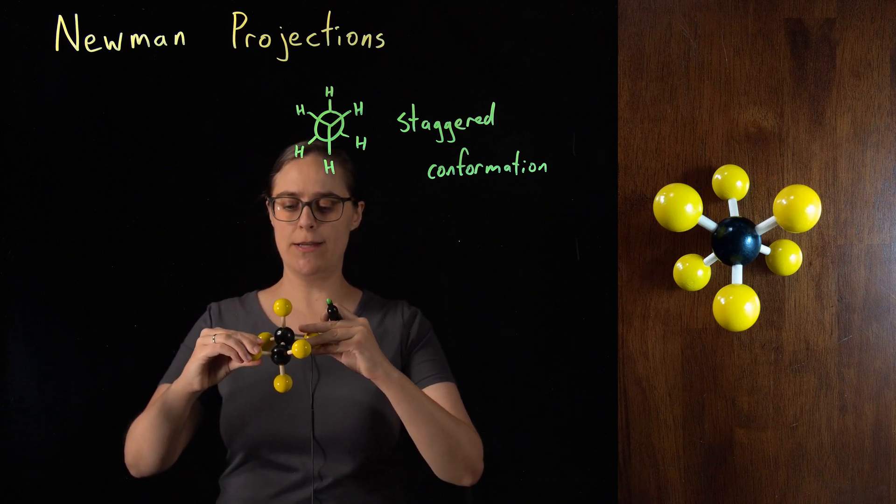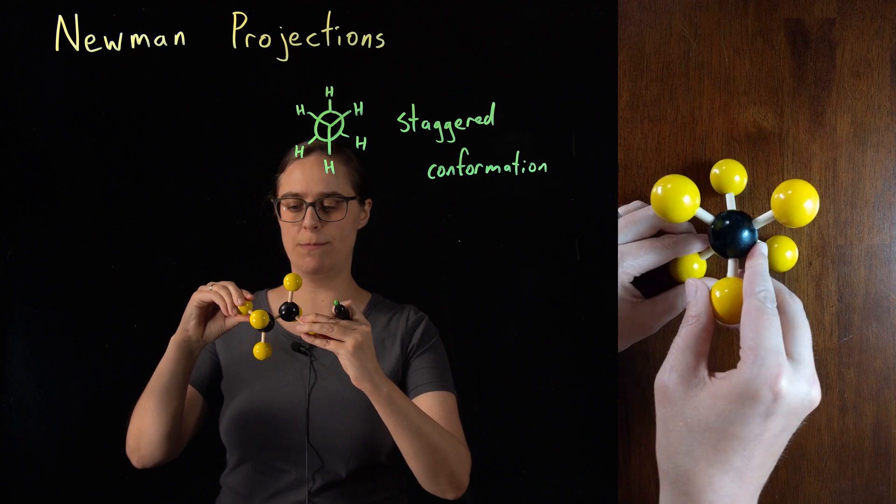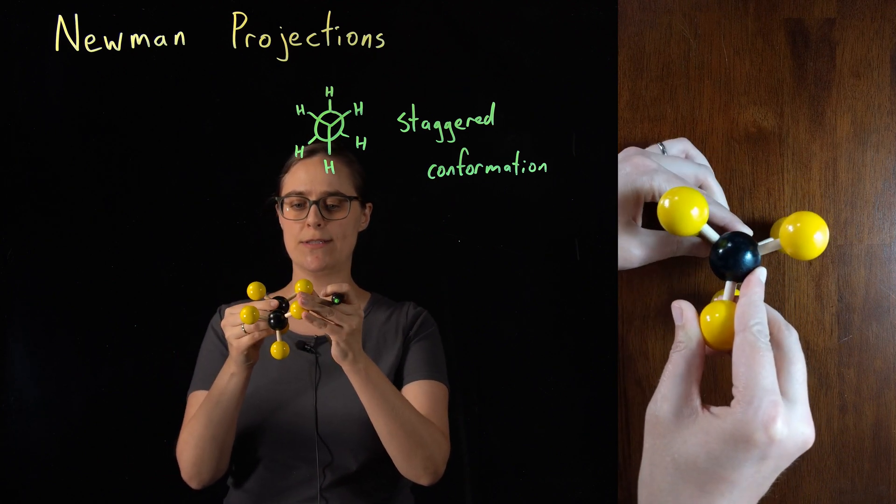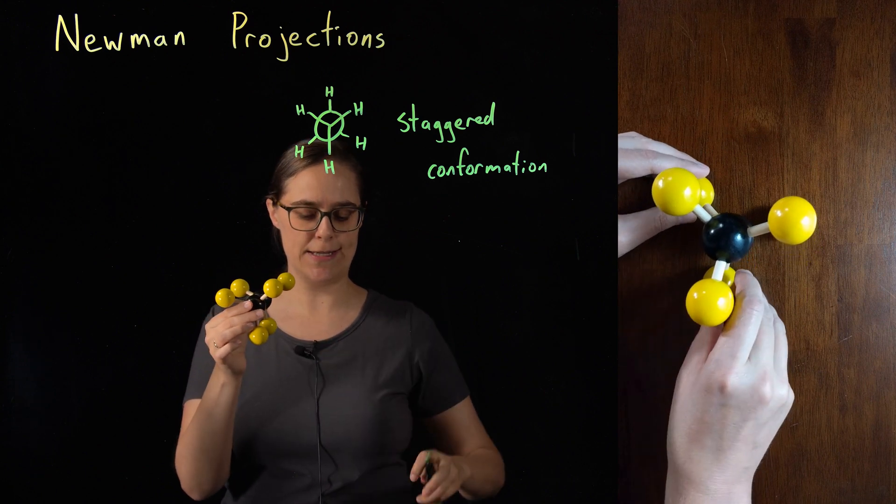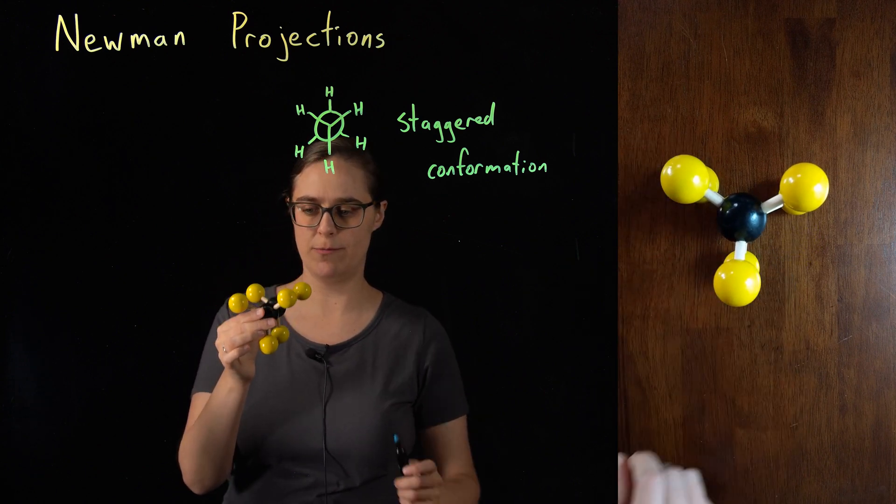But I now want to rotate this carbon-carbon bond by 60 degrees. In doing so, the hydrogens are all aligned. Let's draw a Newman projection for this conformation.